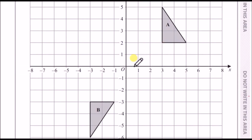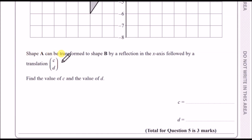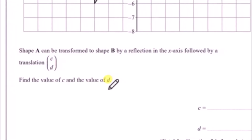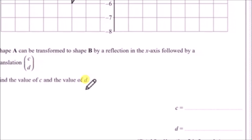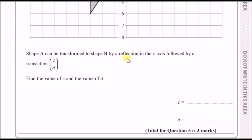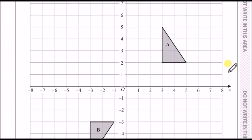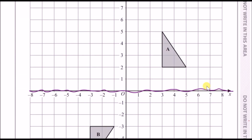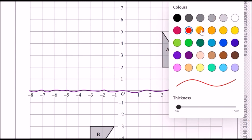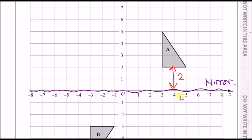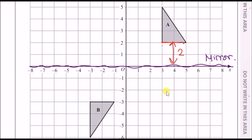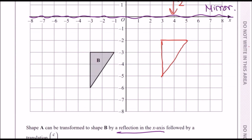Number five: shape A is transformed to B by a reflection in the x-axis, followed by a translation of (c, d). A translation means moving across by c and up by d — a straight shift. The reflection is over the x-axis as the mirror line. Count how many blocks shape A is from the x-axis — it's 2 blocks above, so reflect it 2 blocks below.